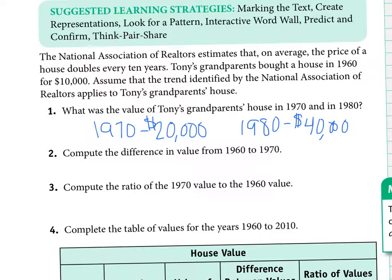Number two says to compute the difference in value from 1960 to 1970. Difference is another word for subtraction. In 1960 the value was $10,000 and in 1970 it was $20,000, so the difference between the two is $10,000.